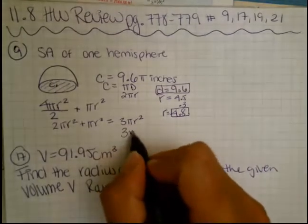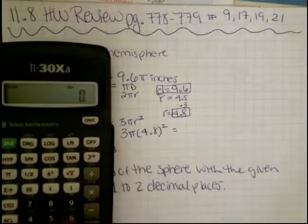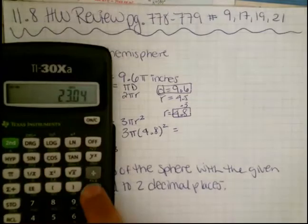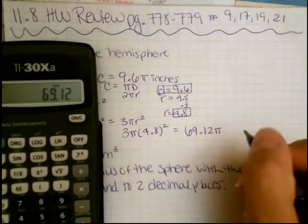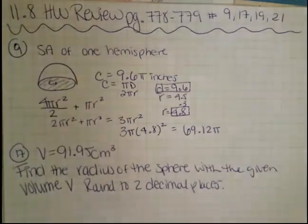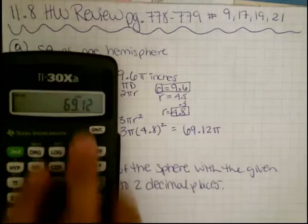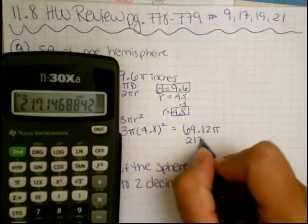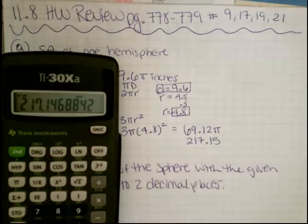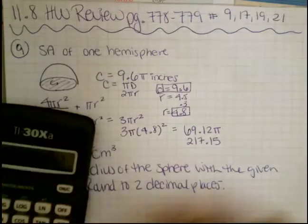Going back to the formula, 3 times pi times my radius squared equals, so 4.8 squared times 3 equals 69.12 pi. They did not tell me where to round, but they did estimate it. So we're going to take that times pi and we're going to get approximately 217.15.